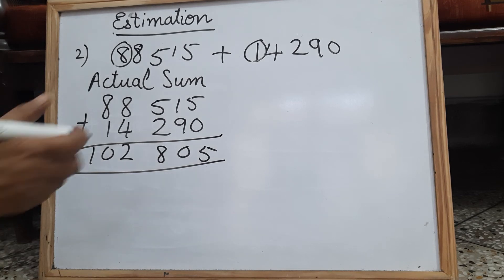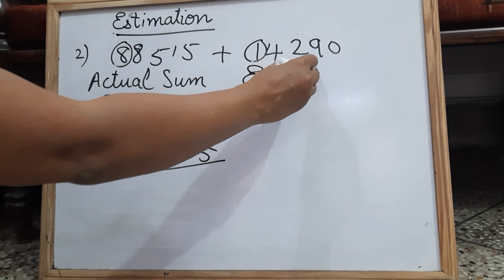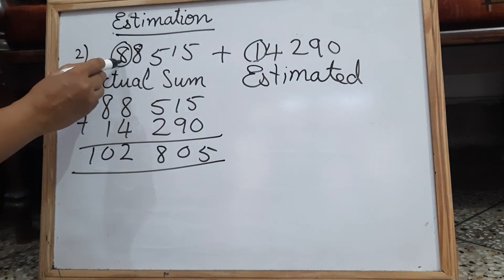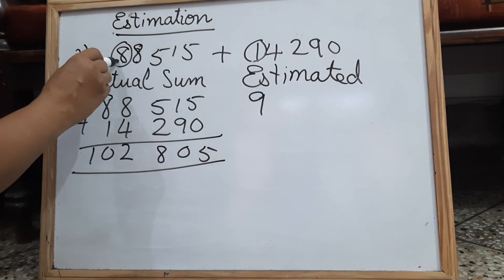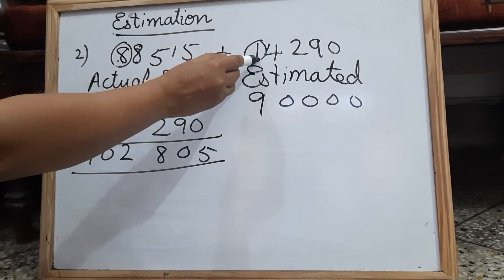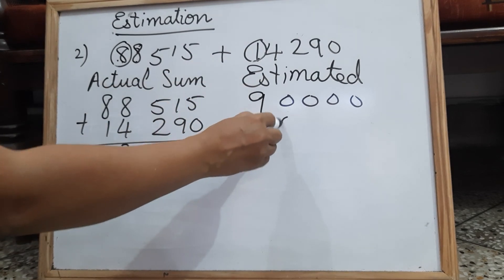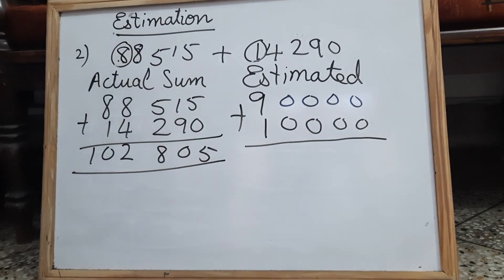Now children, let us find the estimated sum. So this is the required place. The next digit is greater than 5, plus 1 in the required place and the rest of the digits will become 0. Here the next digit is less than 5, so no change and you get 10,000.